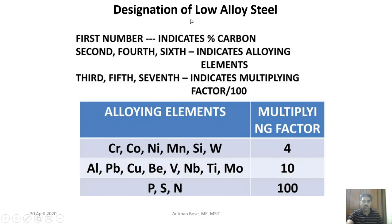For designation of low alloy steels, the first number indicates carbon percentage (multiplied by 100). Alloying elements and their multiplying factors are: for chromium, cobalt, nickel, manganese, silicon, or tungsten — multiplying factor is 4; for aluminium, lead, copper, beryllium, vanadium, niobium, titanium, or molybdenum — multiplying factor is 10; and for phosphorus, sulfur, or nitrogen — multiplying factor is 100.